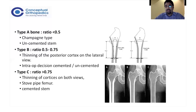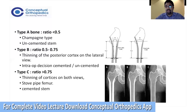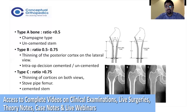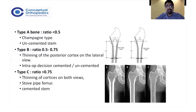In Dorr C, the calcar-canal ratio is greater than 0.75 due to thinning of cortices and significant osteoporosis. Because of this, good proximal fixation cannot be expected, and these stems — also called stovepipe femurs — are suited for cemented fixation. A cementless stem should not be considered in a Dorr C femur. Dorr C femurs are most commonly seen in fractured neck of femur patients, who are good candidates for cemented hemiarthroplasty.